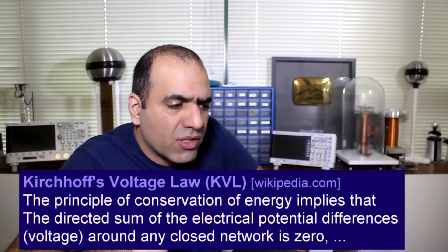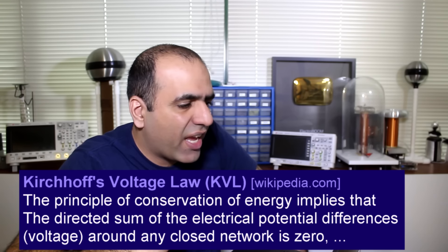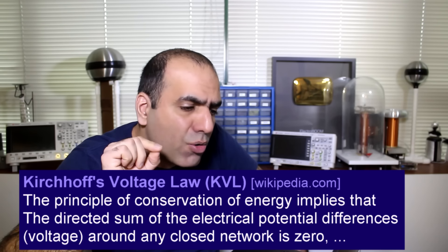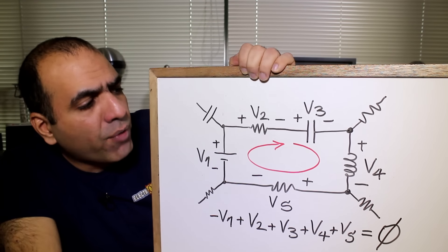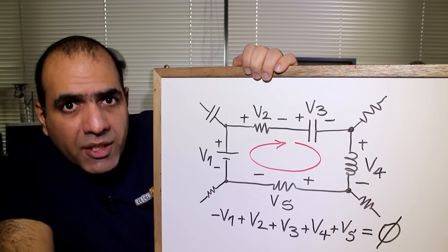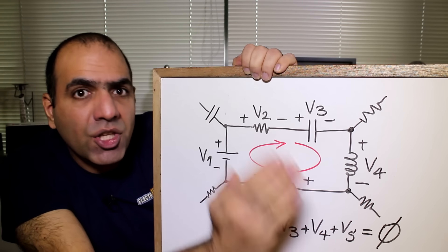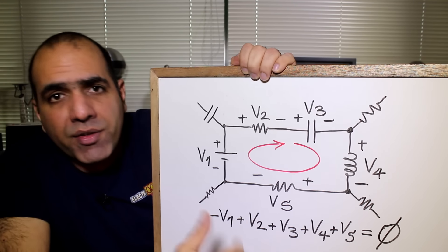Now what's Kirchhoff voltage law or KVL? I read the definition from Wikipedia as my alibi, which is: The principle of conservation of energy implies that the directed sum of the electrical potential differences or voltage around any closed network is zero. This is also my understanding and how I learned it. If you find any closed loop in your circuit, the sum of the voltages across its components at a given time is zero, adding them up in one direction. This has never failed me.